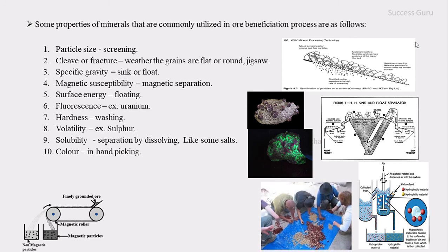The next property is color, which is very useful for hand picking. Some minerals have a peculiar color that makes them easy to identify and separate. This physical property of color can be used effectively in ore dressing.